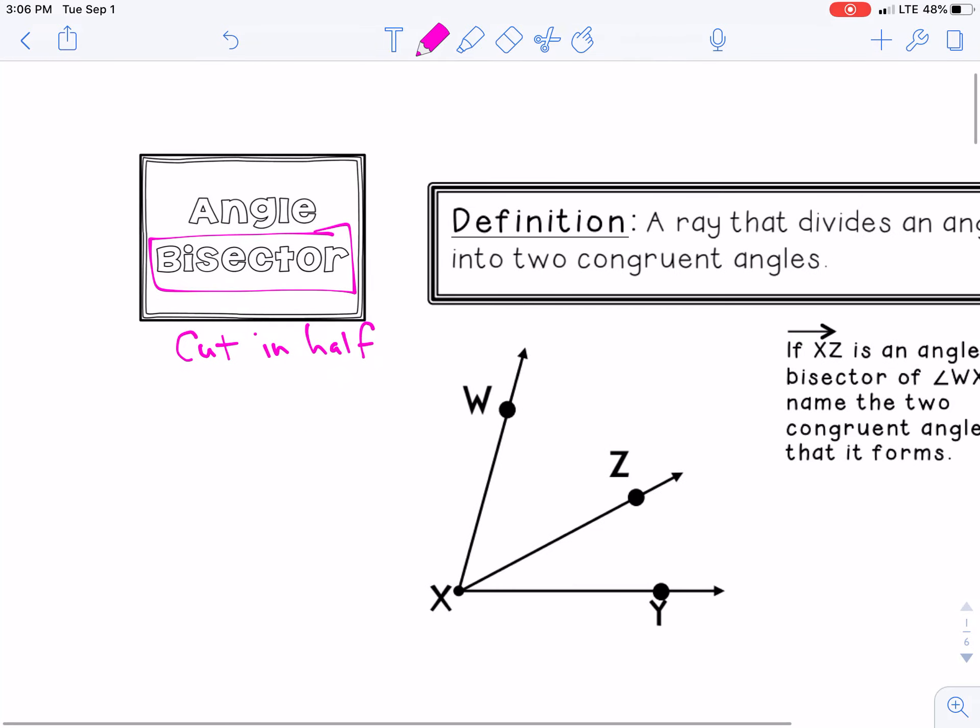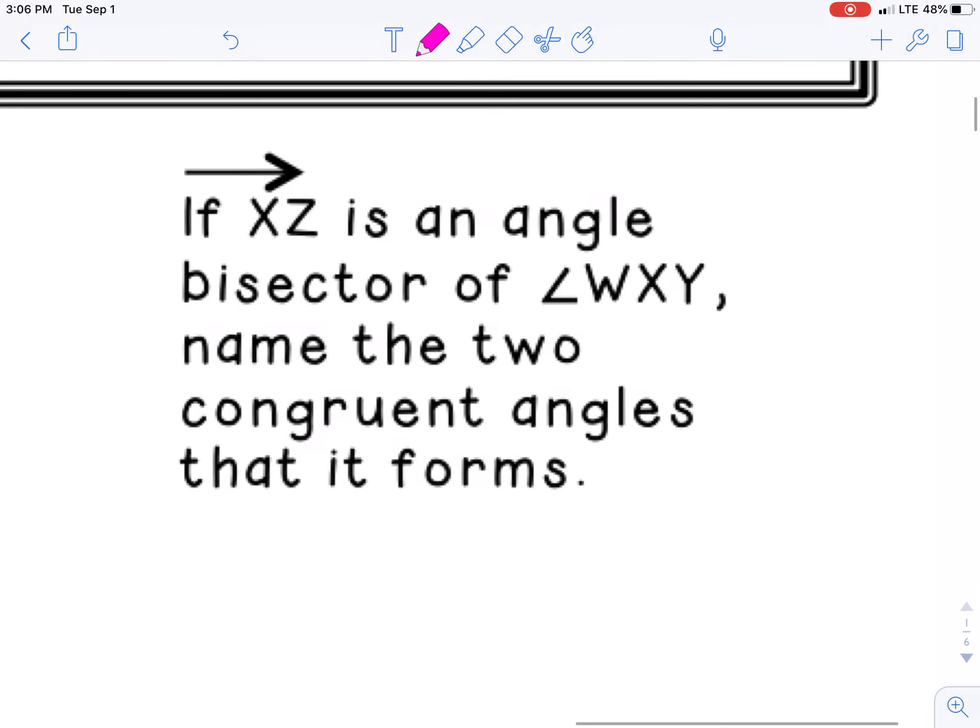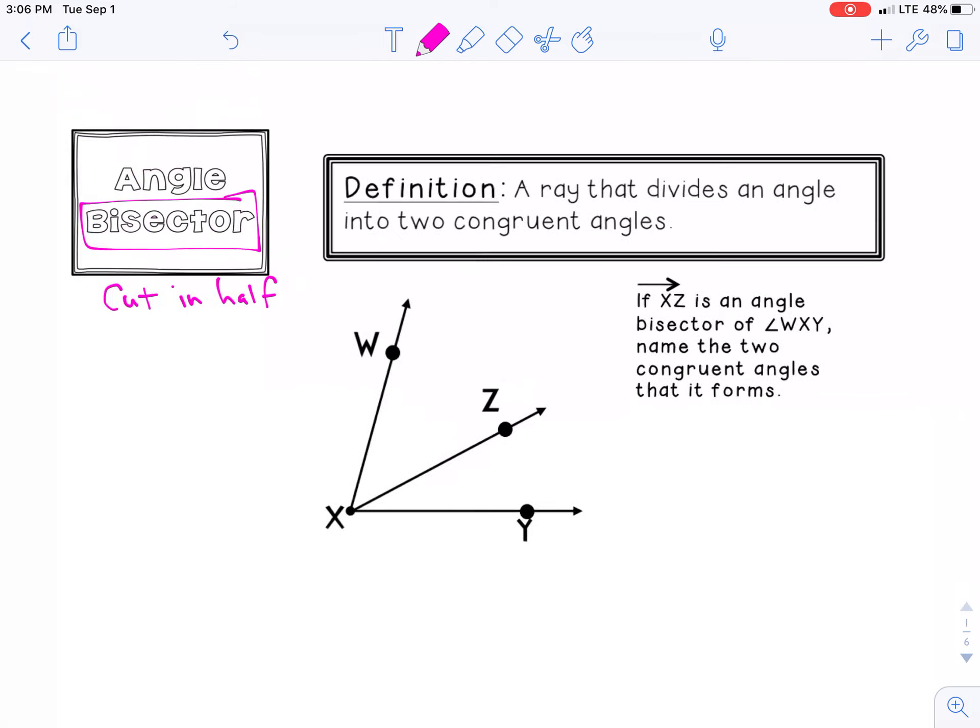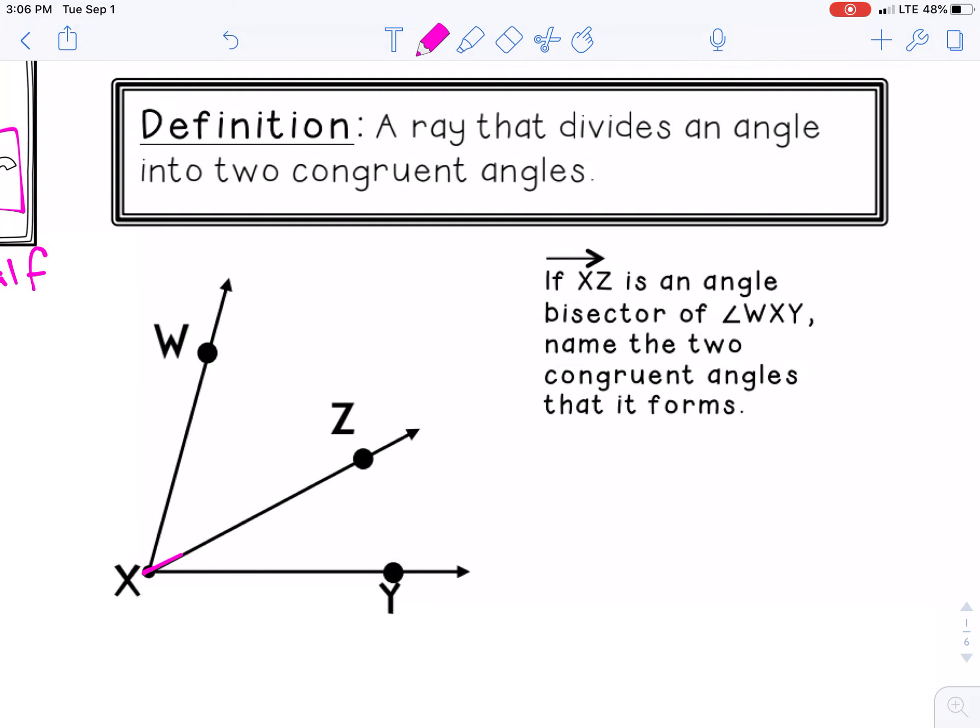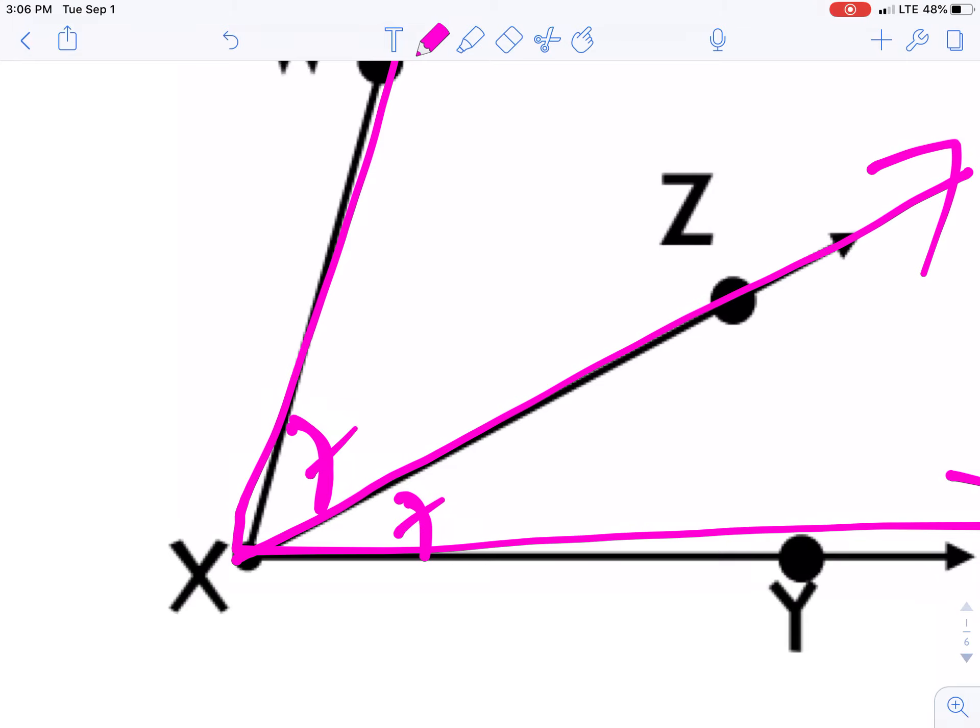So we're talking bisectors. If the ray XZ is an angle bisector or XZ bisects, it will form two angles. So what we want to do is name those two angles. Here's XZ, it's split WXY in half. So the two congruent angles would be angle WXZ and ZXY or YXZ. And like segments we talked about, if I'm going to show congruent angles, we use tick marks. Our angle tick marks will look something like this, or sometimes they might have tick marks on those slashes. Anytime we see those in the corner of angles, that means congruent.